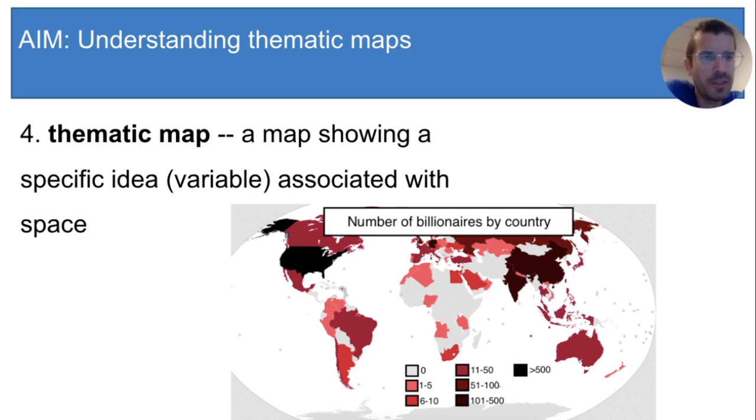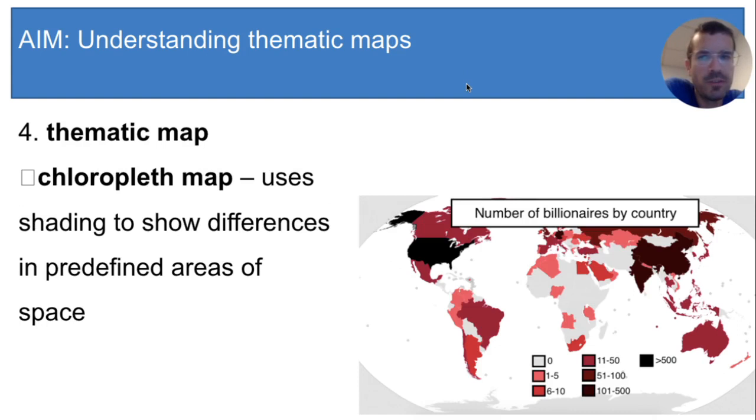Now we're going to look at a few different types of thematic maps, and each type presents information or the variable in its own way. The first type is called a chloropleth map. Chloro means color,